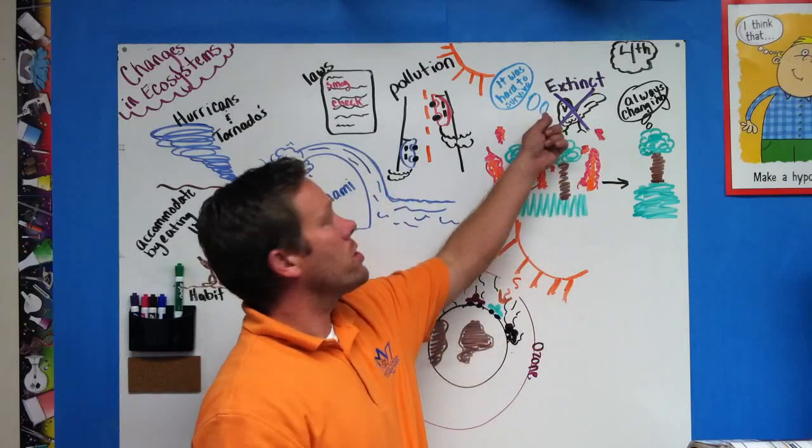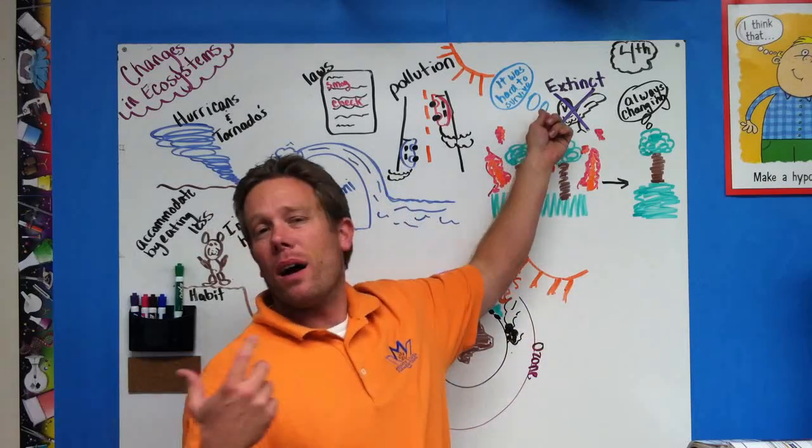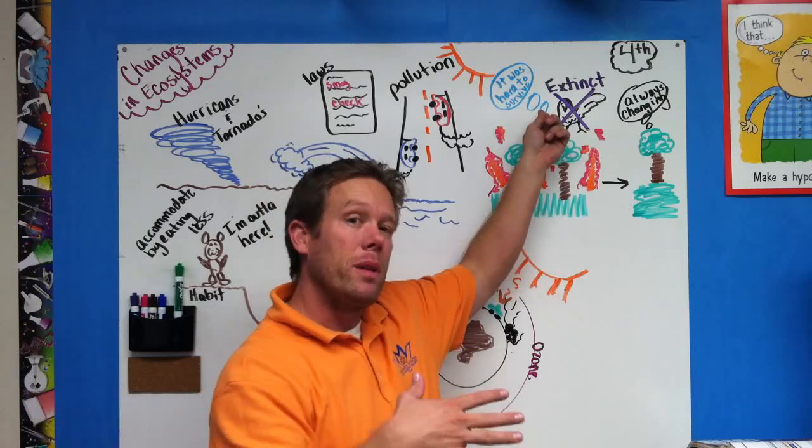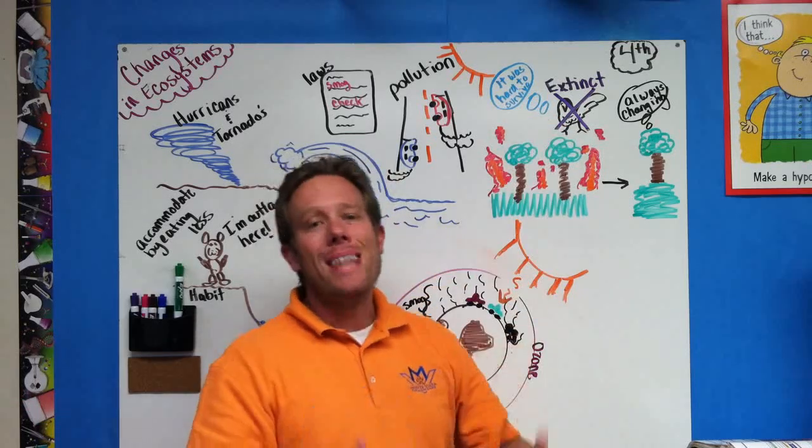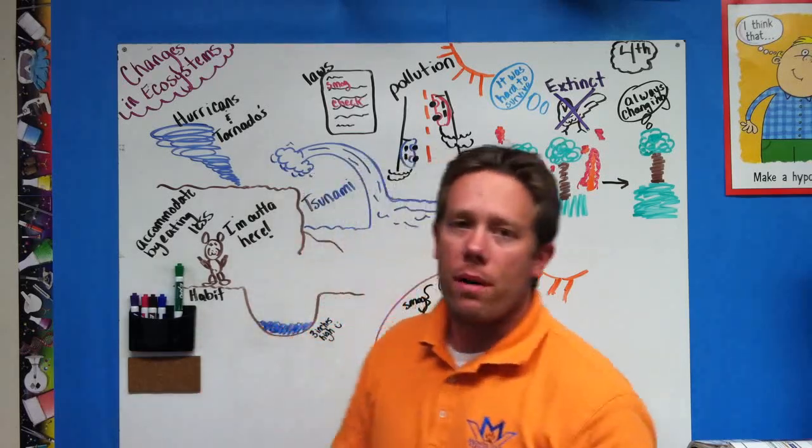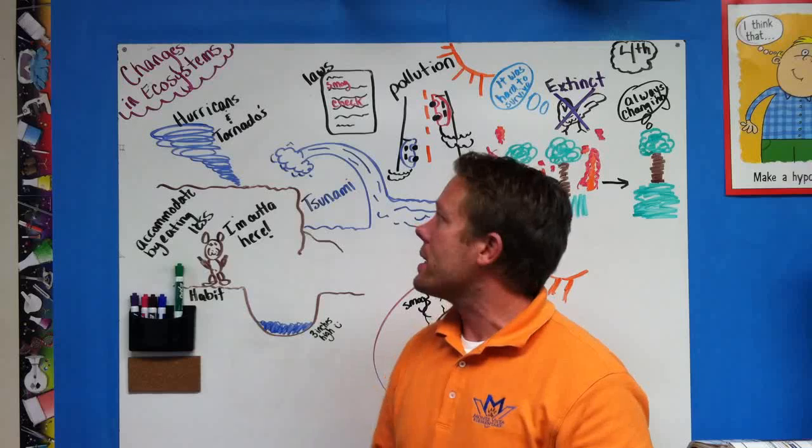What happens when ecosystems change? We talked about birds or other type of animals can become extinct if they're completely wiped out. Or they can become endangered like the California condor which means the number of them becomes really small in existence.